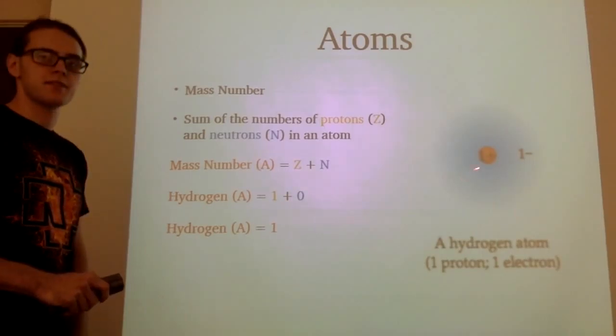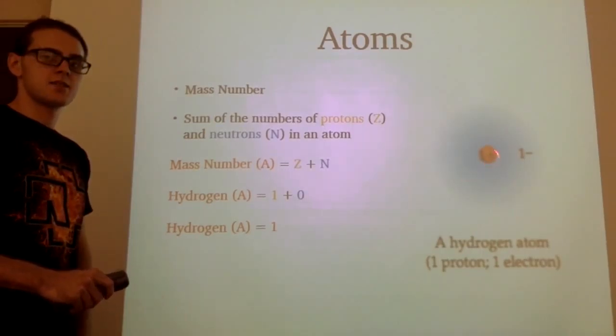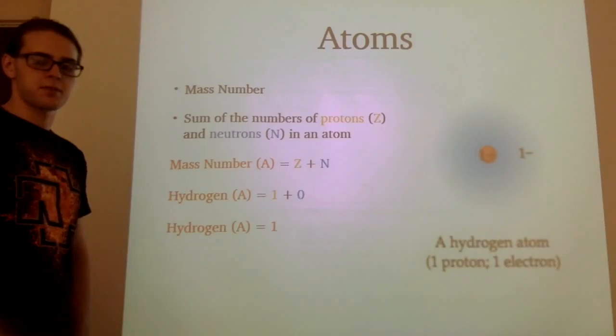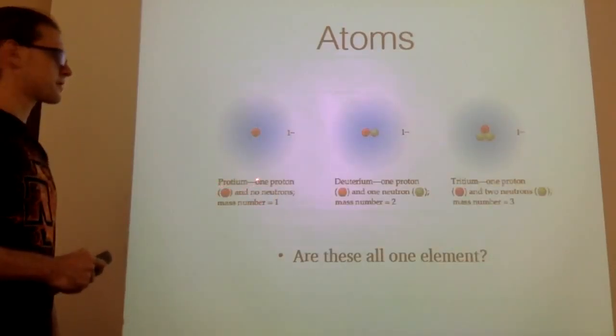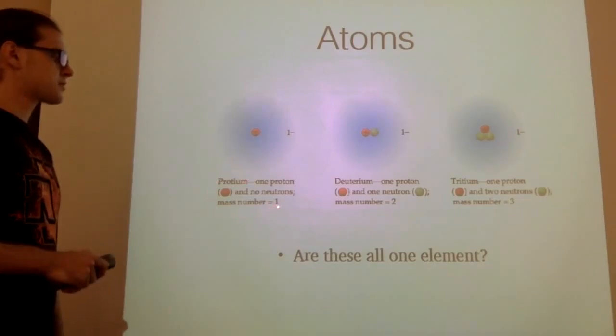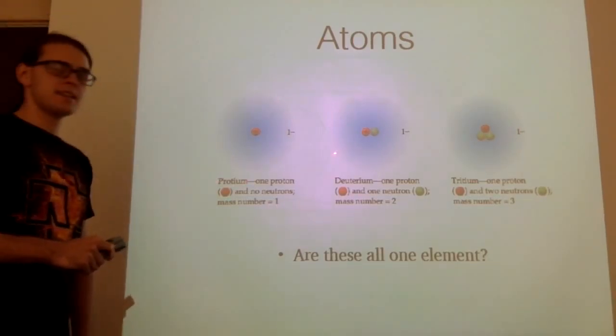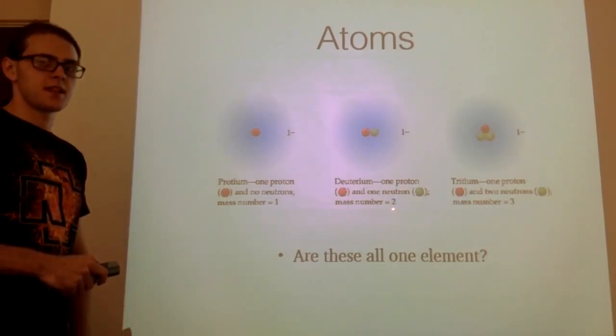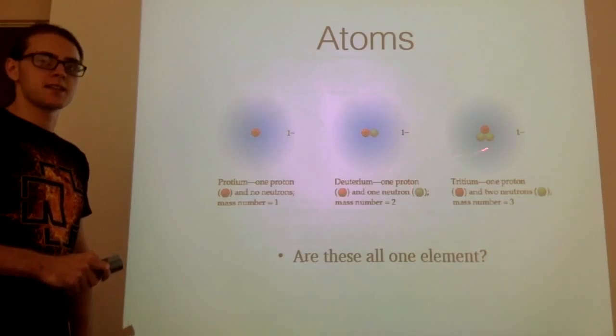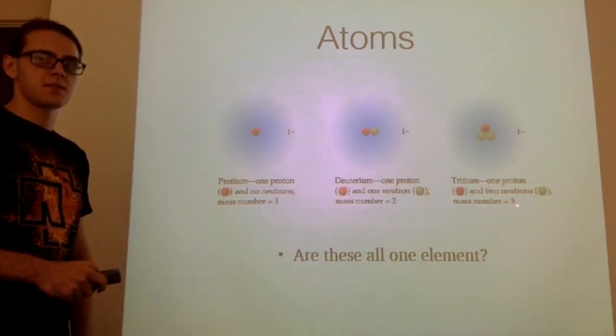What happens if we start adding neutrons in with the proton? We started with protium, what we call hydrogen, with a mass number of one. We add one neutron to get deuterium with mass number two, and add two neutrons to get tritium with mass number three.